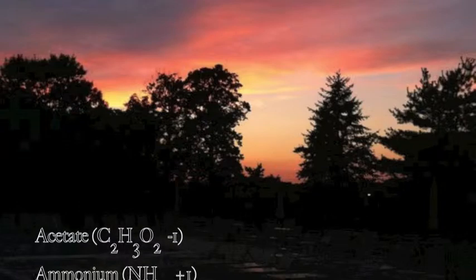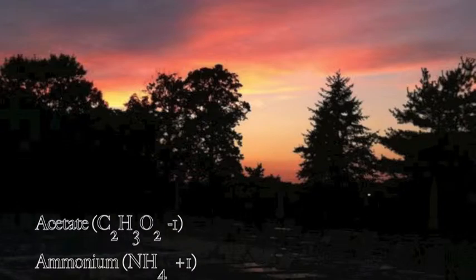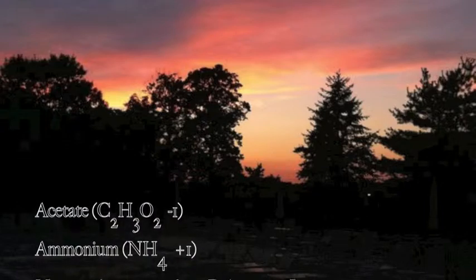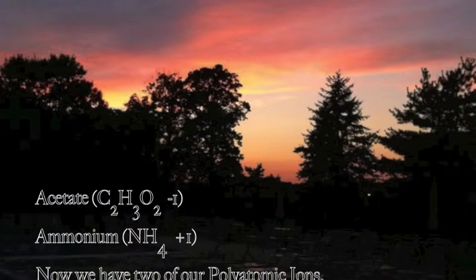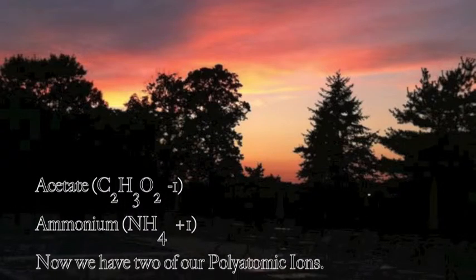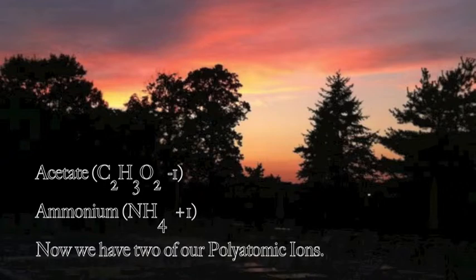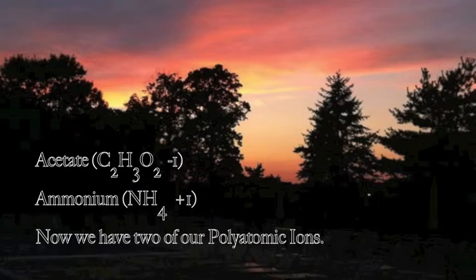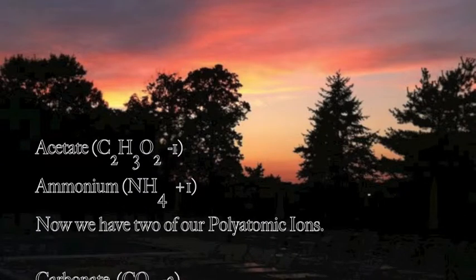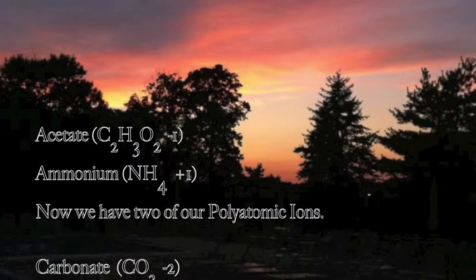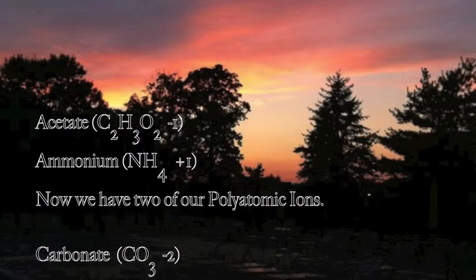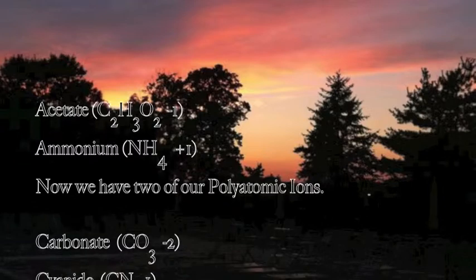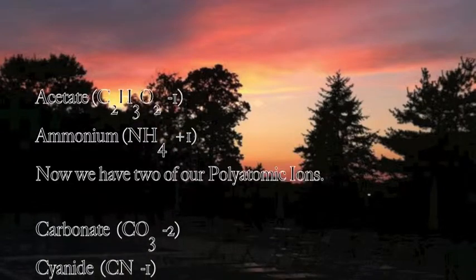ACETATE, C2H3O2, minus 1. AMMONIUM, NH4 plus 1. Now we have two of our polyatomic ions.